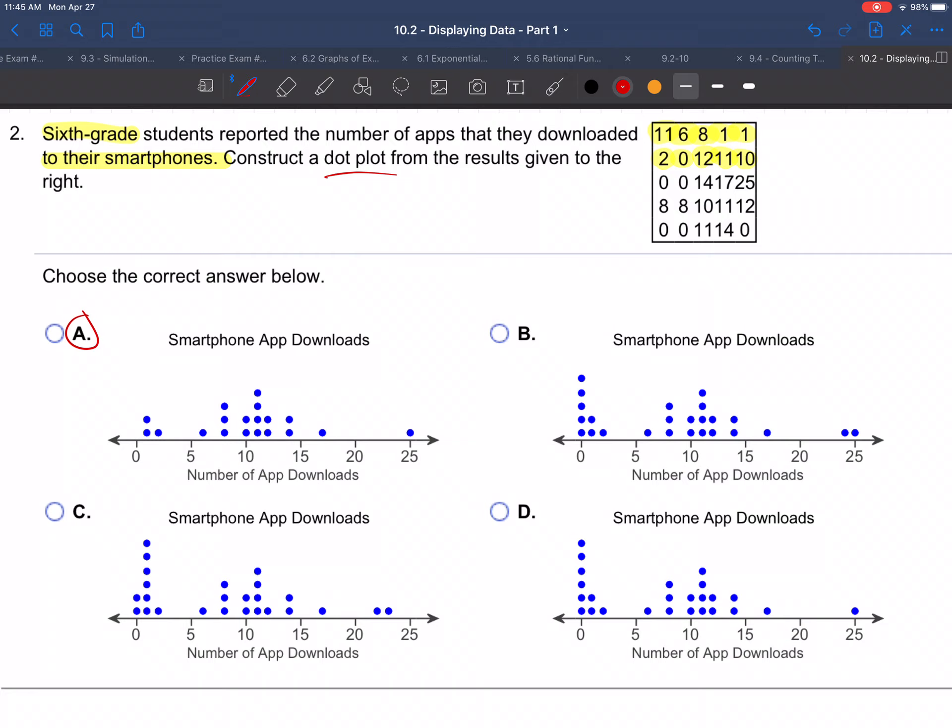Well, looks like they have a dot up here at 25. Is that true? Yeah, there is some sixth grader that downloaded 25 apps. That looks right. And another one, this looks like it's about 17. Yeah, that's looking good. A couple of 14s.